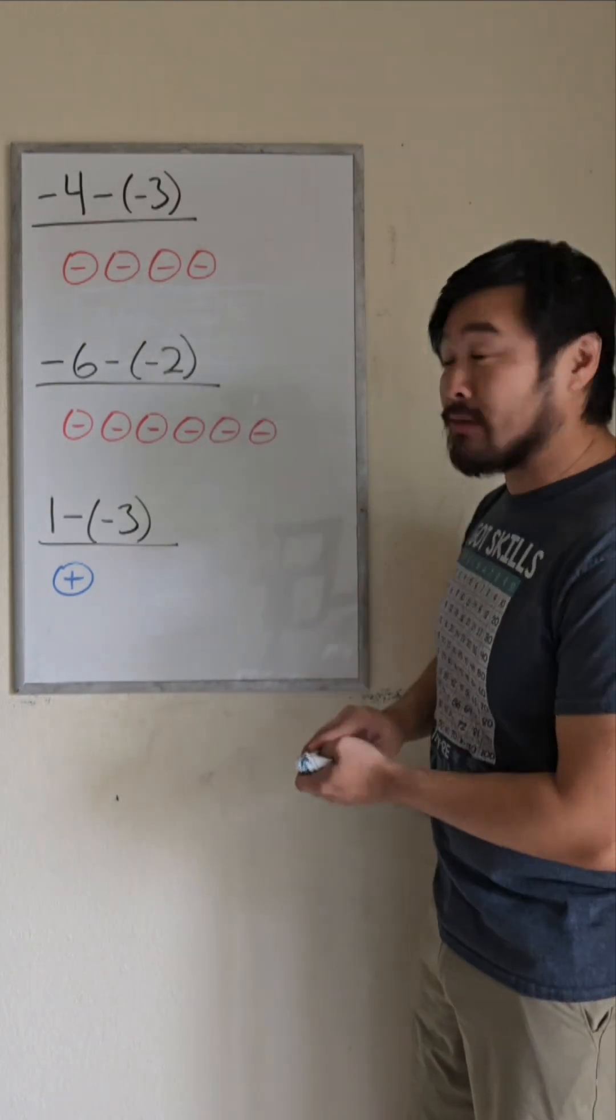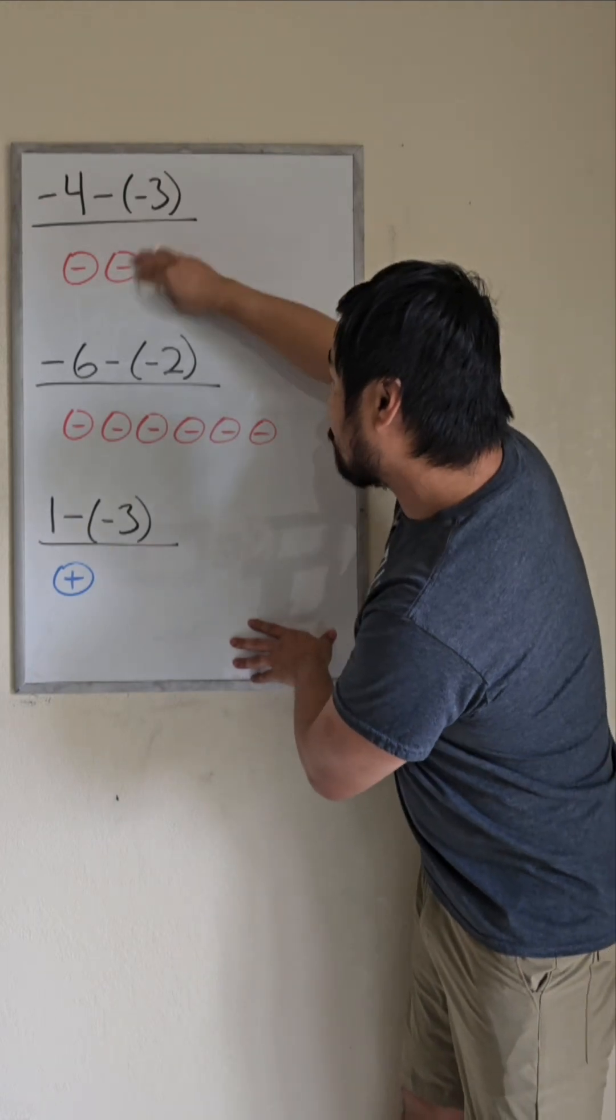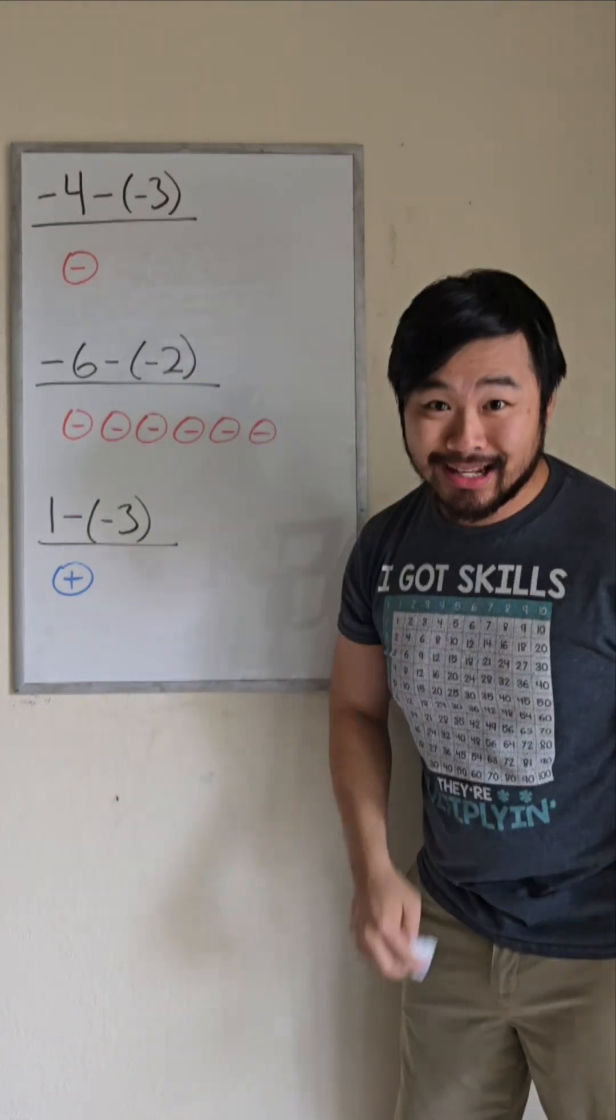with negative 4 take away negative 3, literally take away negative 3. So the answer is negative 1.